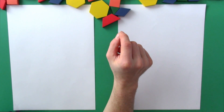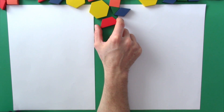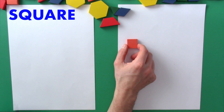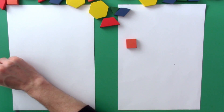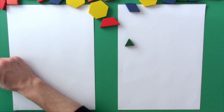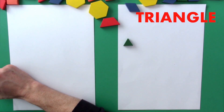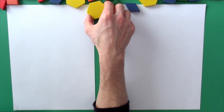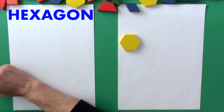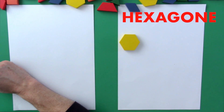Before we begin building our numbers 1 through 10 with shapes, let's find out what they're called. What's this shape called in English? Square. And how do we say this square in French? Carré. This shape here, what's it called? Triangle. And how do we say triangle in French? Triangle. And this yellow shape, what's it called in English? Hexagon. And how do we say hexagon in French? Hexagone.